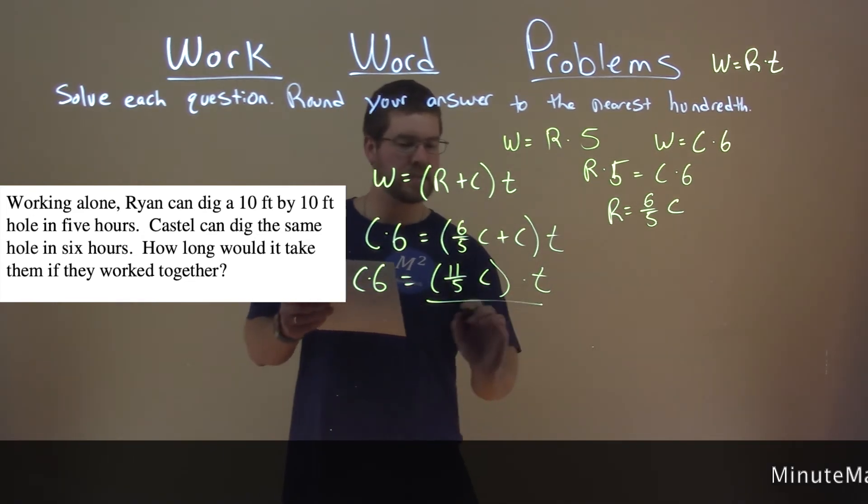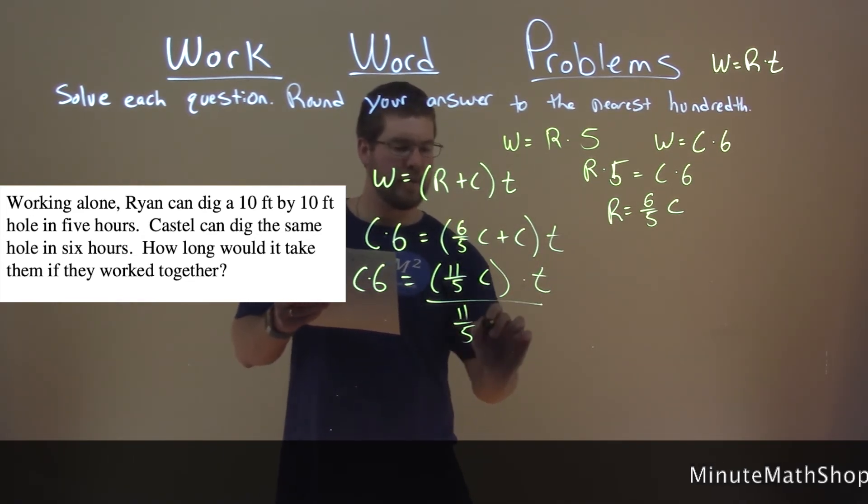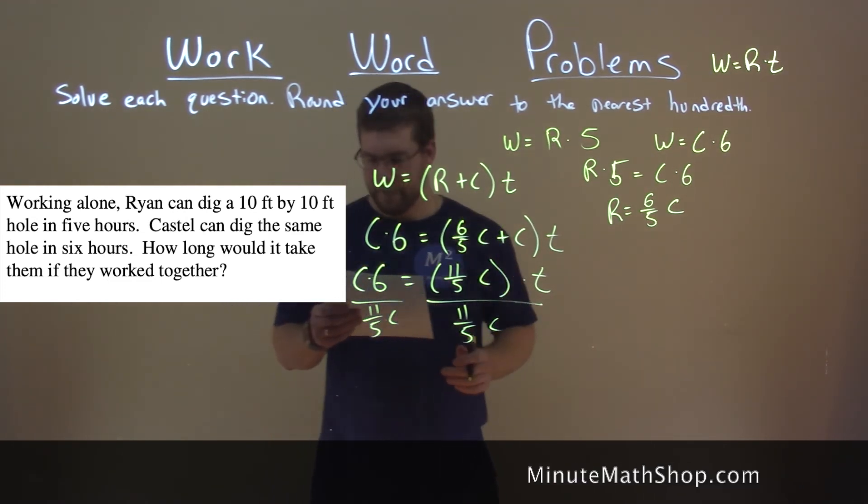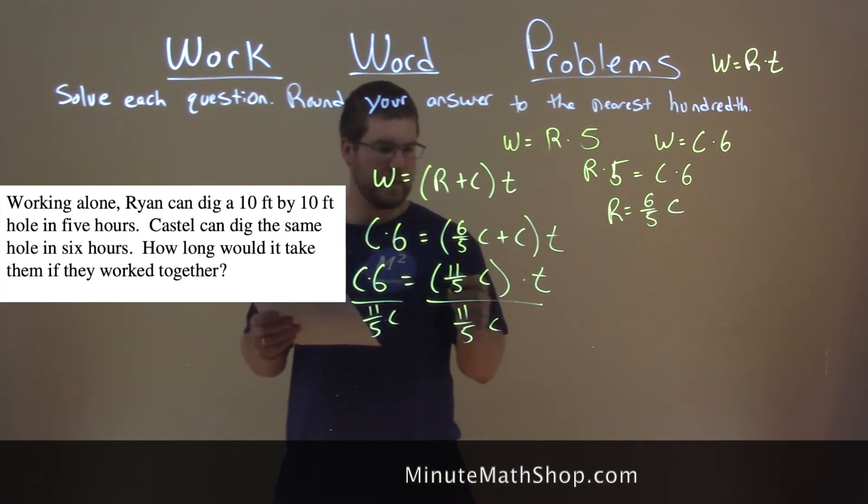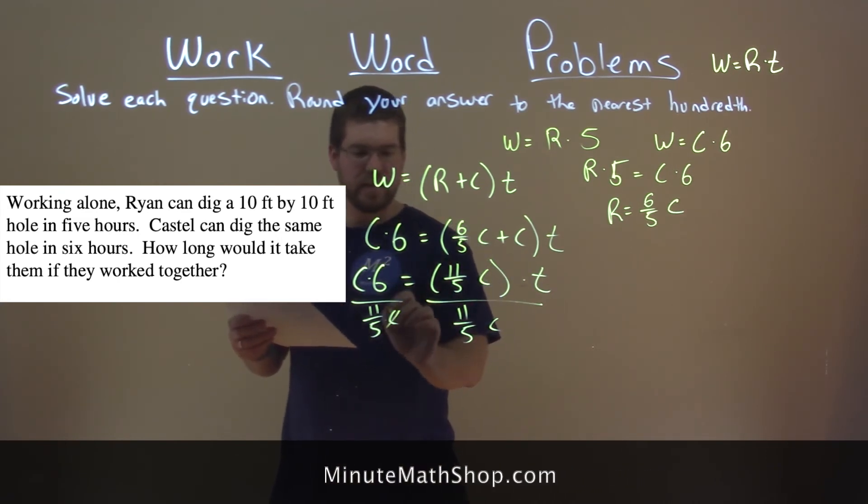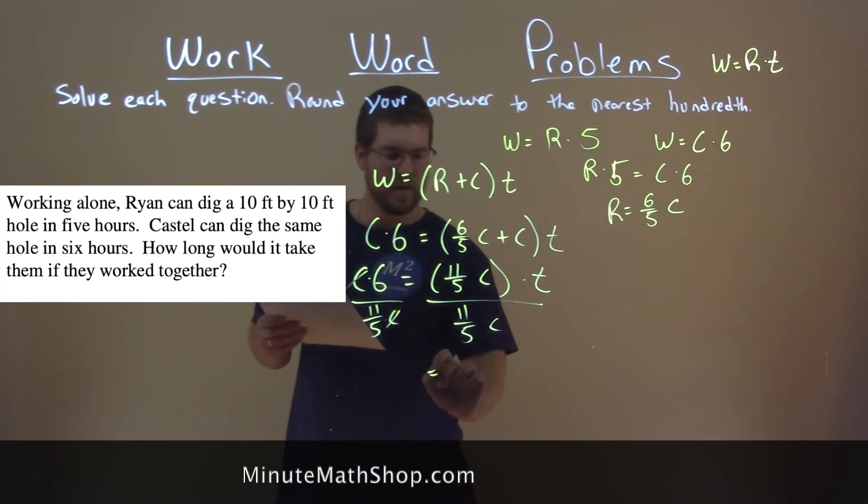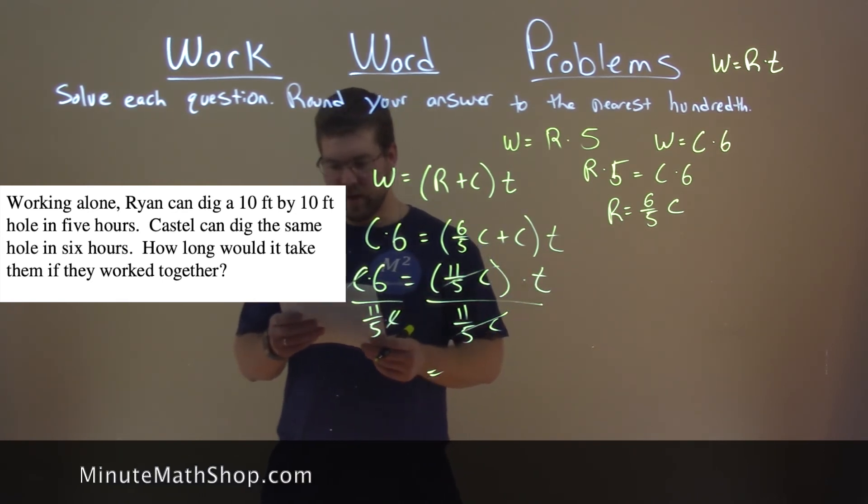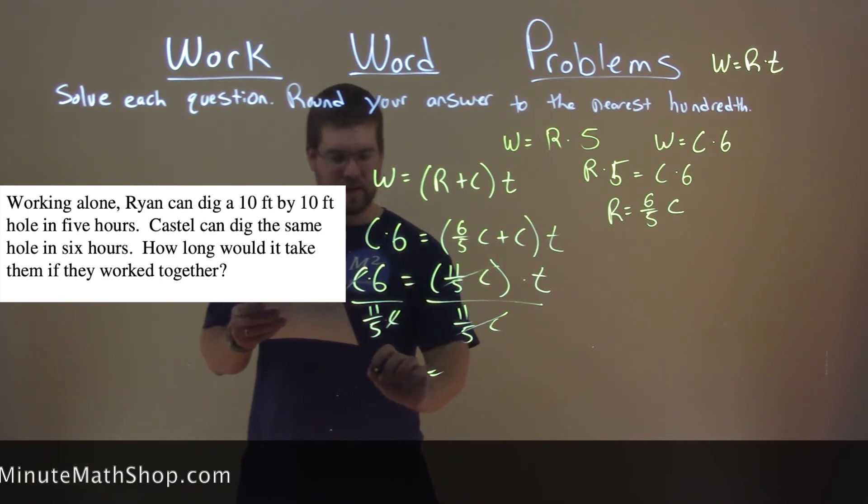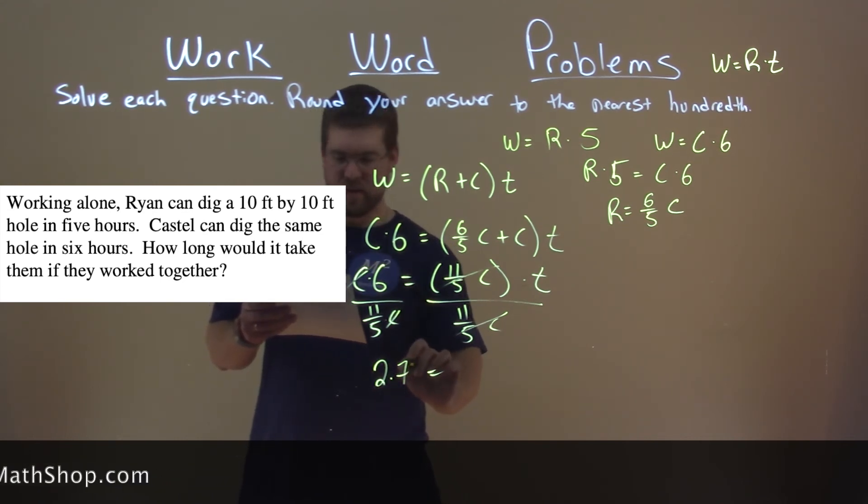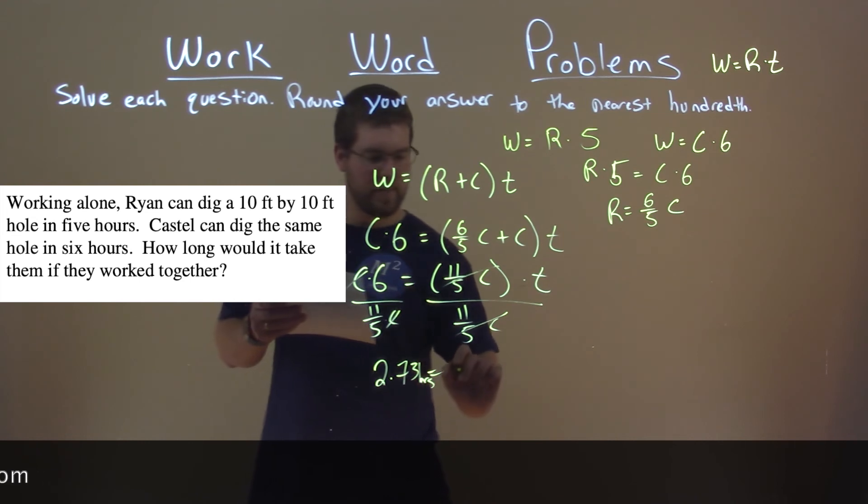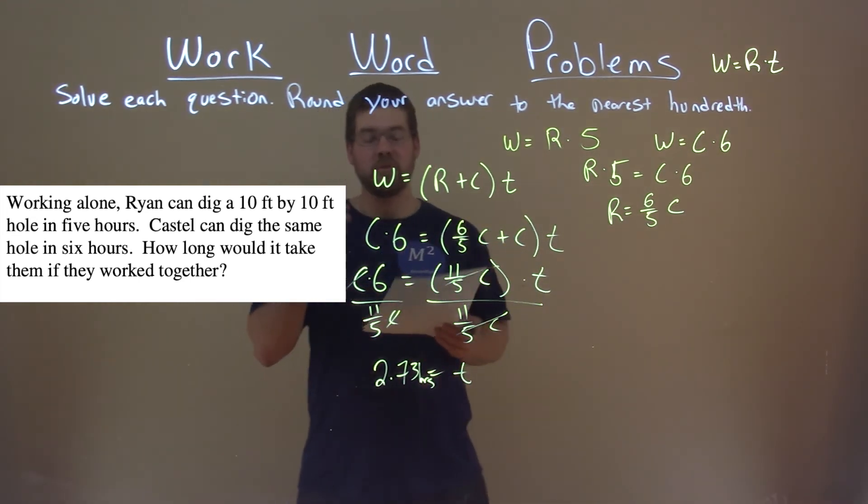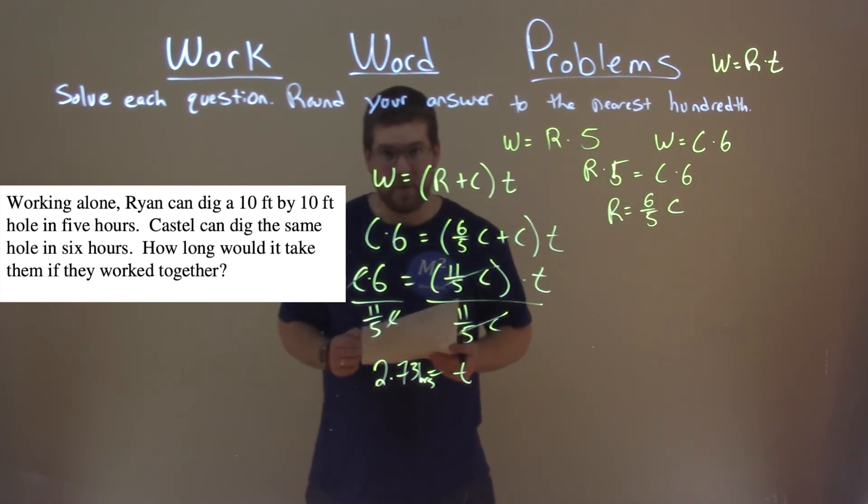We're going to divide both sides here by eleven-fifths C. And we're left without, this is tricky, right? Kind of how I wrote it, but the C's end up canceling, and so both parts cancel. And six divided by eleven-fifths is, as a decimal form, 2.73 hours. And that's the time it takes for them to do this job if they work together.